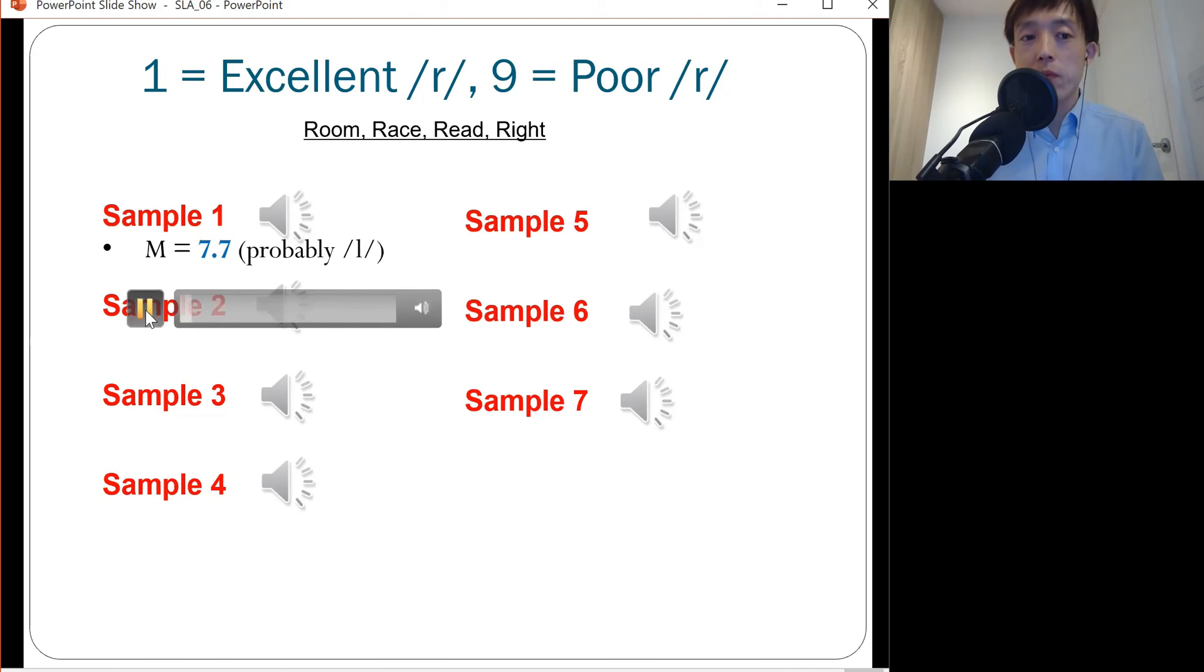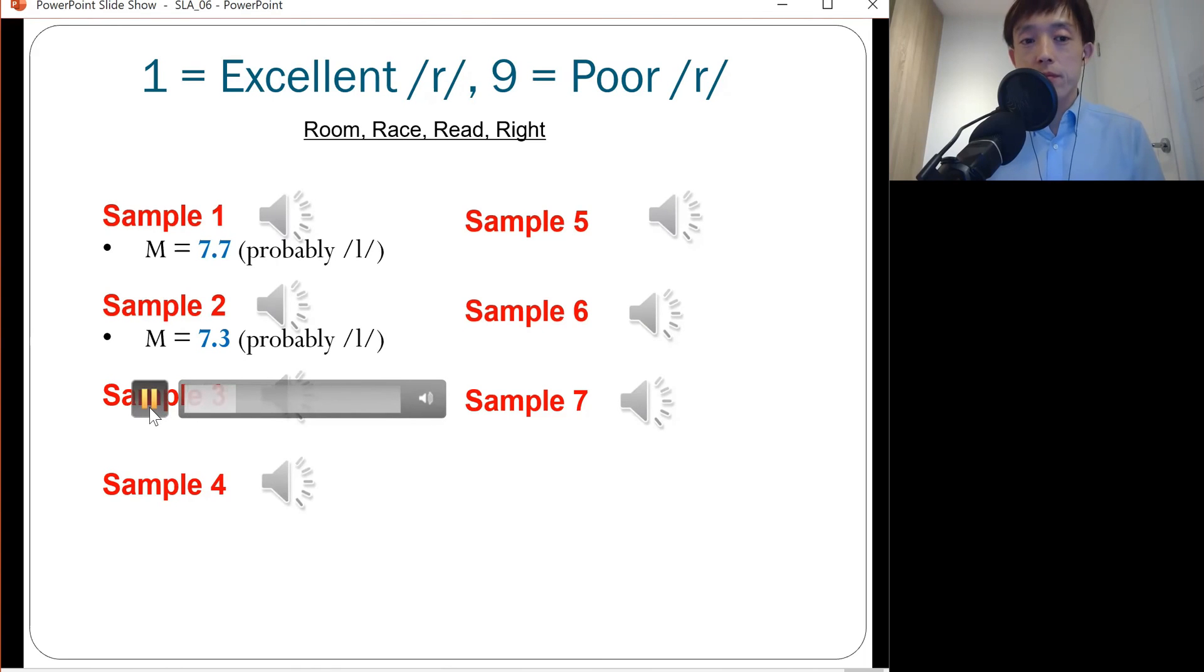How about participant 2? His pronunciation was judged to be probably L. How about participant 3? In this case, somewhere in between neutral, so 5.2. How about participant 4? The pronunciation was judged to be probably R, so 3.2.